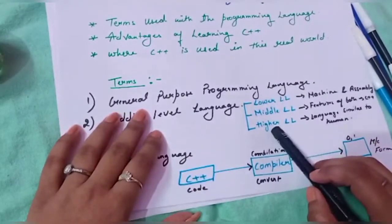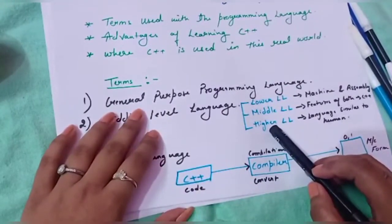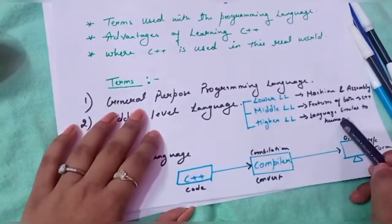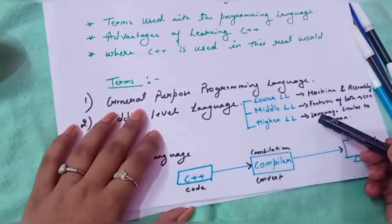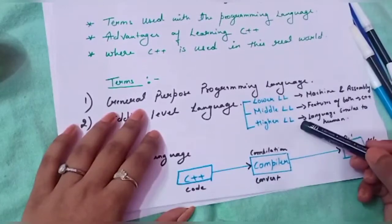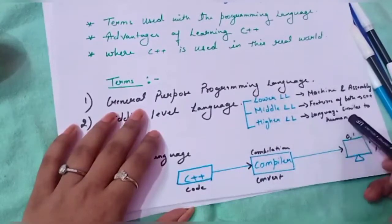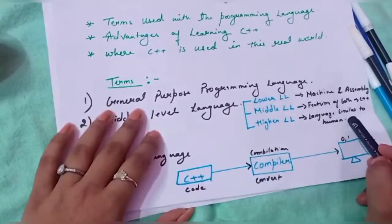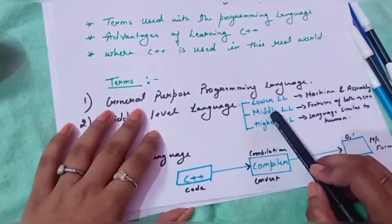Before discussing middle level language, we should first see what is a higher level language. Higher level languages are those languages which are similar to human languages — the codes are written in our normal English language, where even a third person who does not understand programming can read the code very easily, because the codes are written in normal human language.